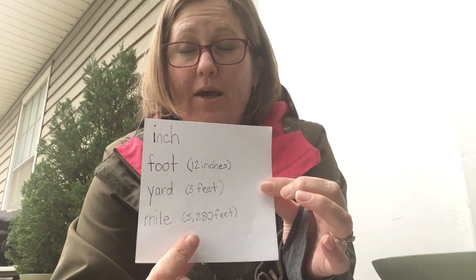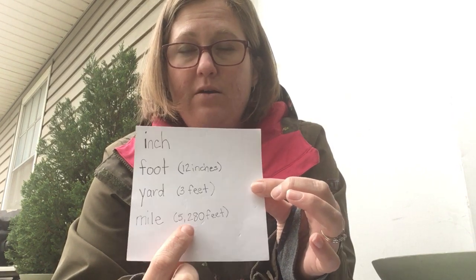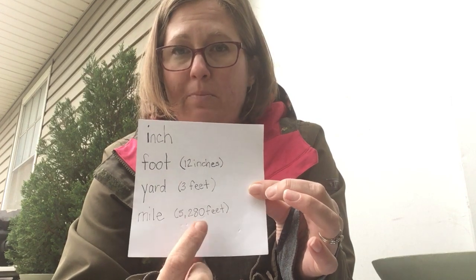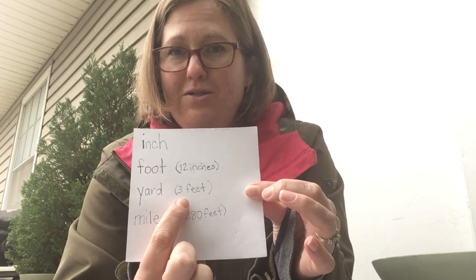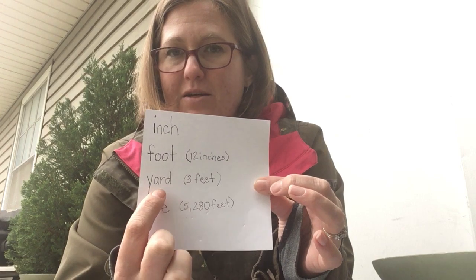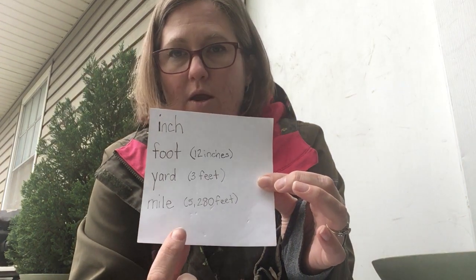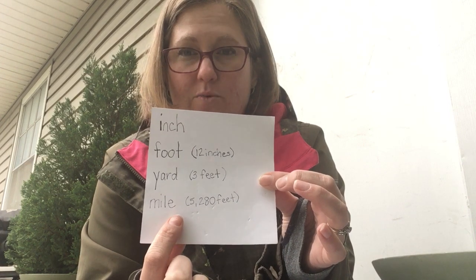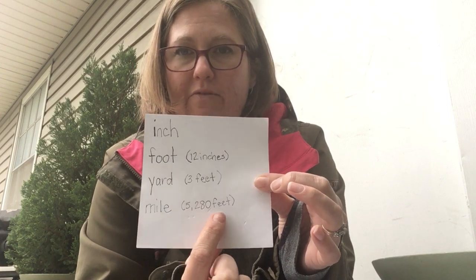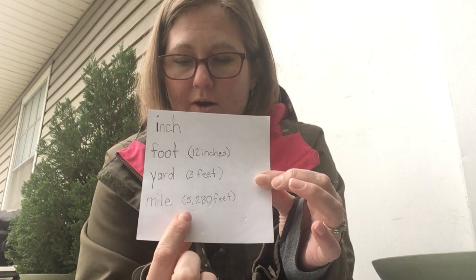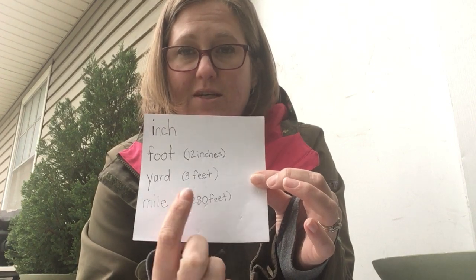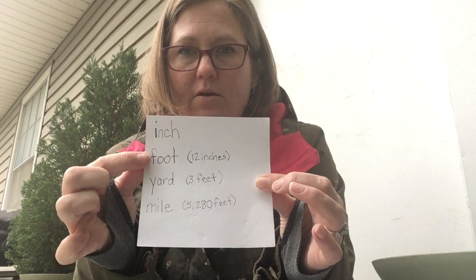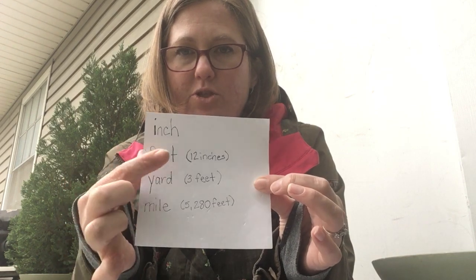Five thousand two hundred eighty is also divisible by three, so you can figure out that one mile is also one thousand seven hundred sixty yards. So a mile is five thousand two hundred eighty feet or one thousand seven hundred sixty yards. To recap: one foot is 12 inches.